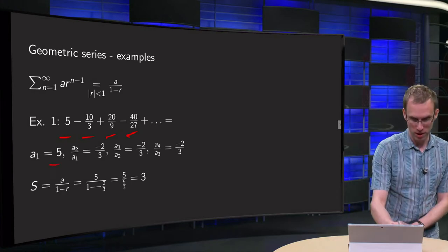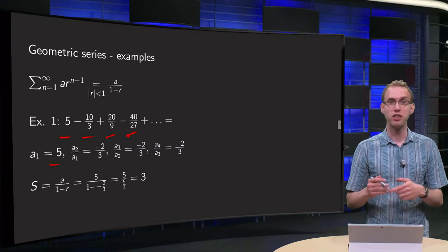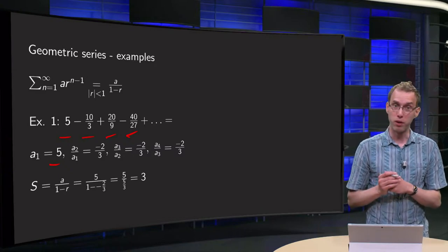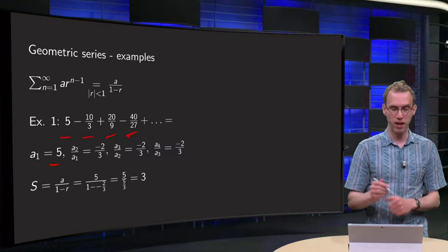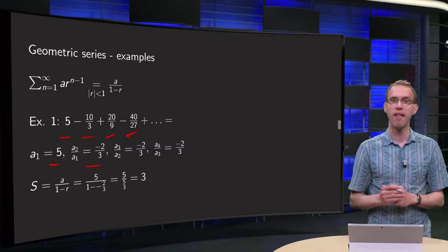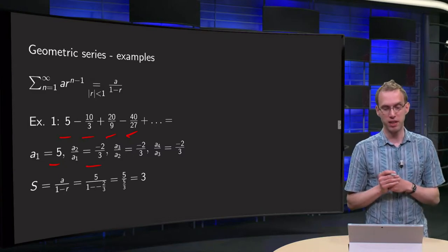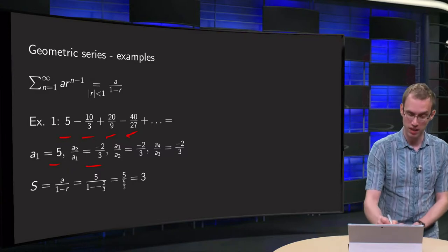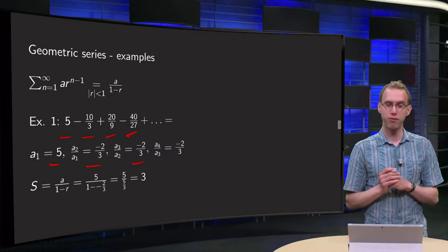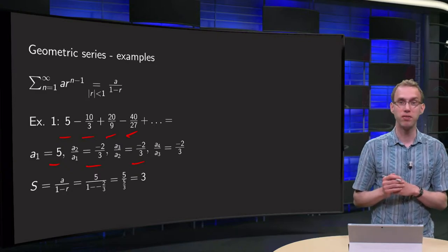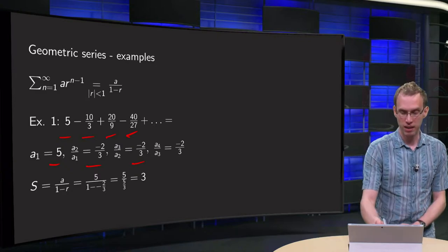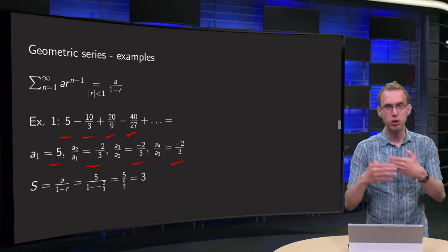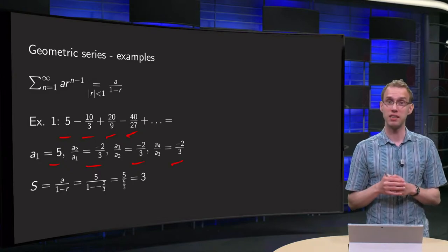Our first term a1 equals 5, then the ratio of a2 over a1 equals minus 10 over 3 over 5 equals minus 2 over 3. Then if we try to find a3 over a2, we get 20 over 9 divided by minus 10 over 3, which is again minus 2 over 3, and a4 over a3 divided by 20 over 9 again minus 2 over 3. I assume that this pattern repeats like this,